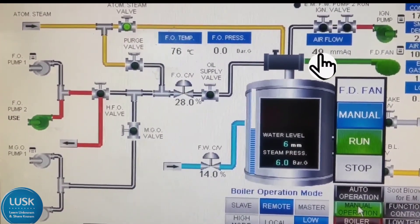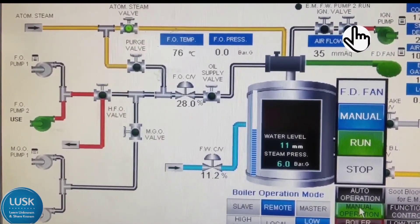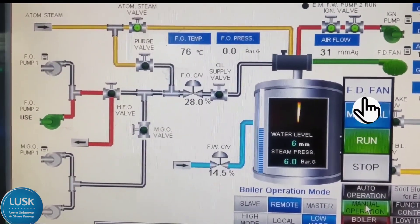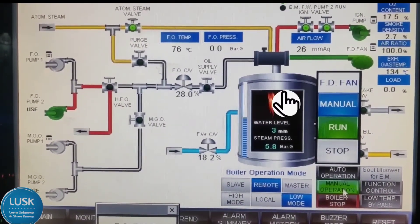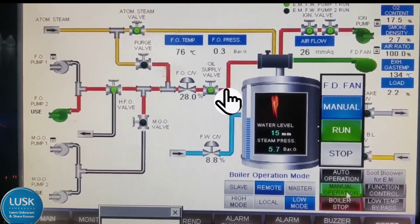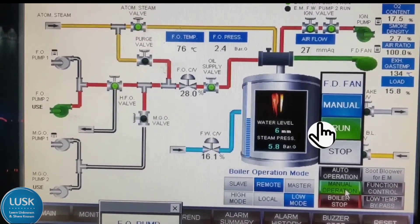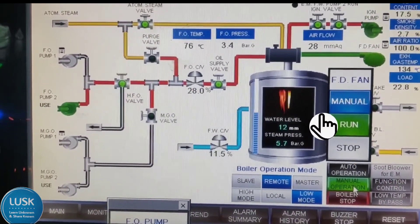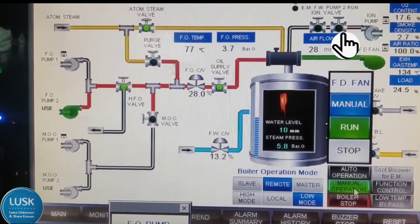After the ignition pump starts, when the flap reaches the minimum value — around 22 — these two valves will open automatically to fire the pilot burner. Now you can see those valves opened and pilot burner is firing right now. Then the oil valve opened and now the main burner has also started firing. There is a flame sensor which detects whether the flame is steady or not. After the flame is steady, the pilot burner stops automatically, and the ignition pump will stop and valves will also get closed.